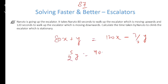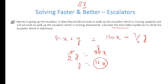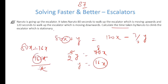When we equate it, it becomes 5/2 y = 40x, so y = 16x. The total number of steps becomes 80x + 16x = 96x, divided by speed x, so therefore this becomes 96 seconds.